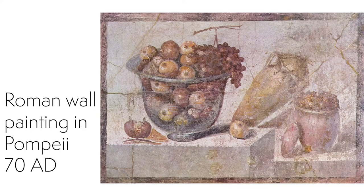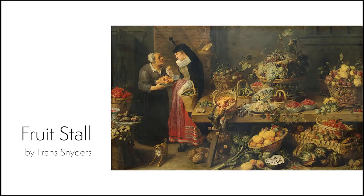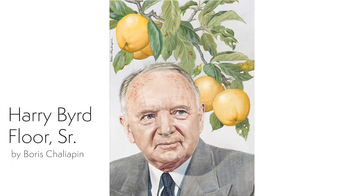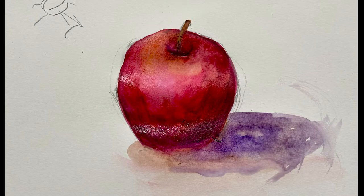Fruits and vegetables have been appearing in art pretty much since art began. Fruit as an object in art can simply be decorative or it can represent a message. This is Harry Bird Flood Sr. with apples in the background. He was a newspaper publisher and a politician. Bird's family owned and operated a large successful apple farm, so with that inspiration let's learn how to draw an apple.